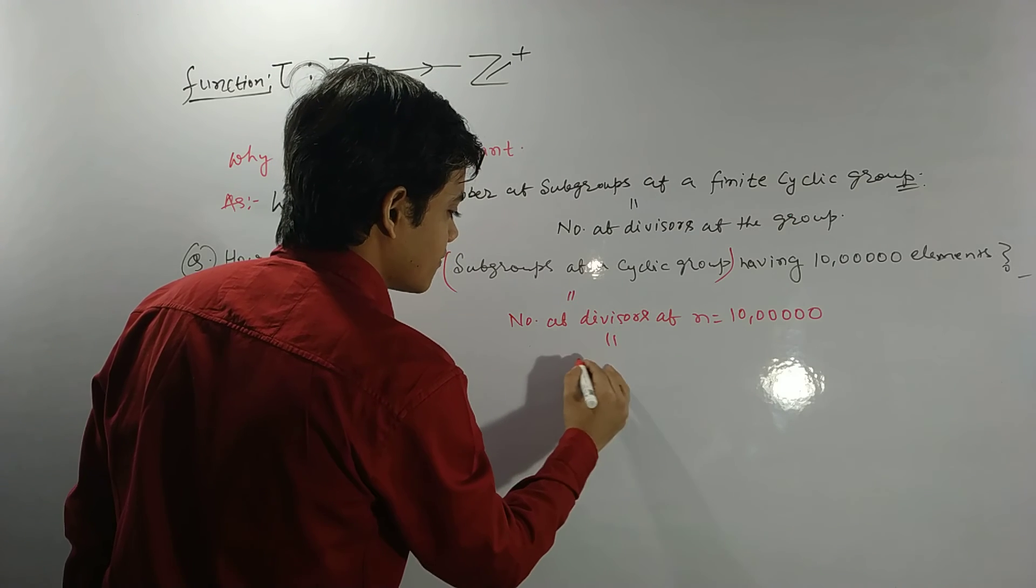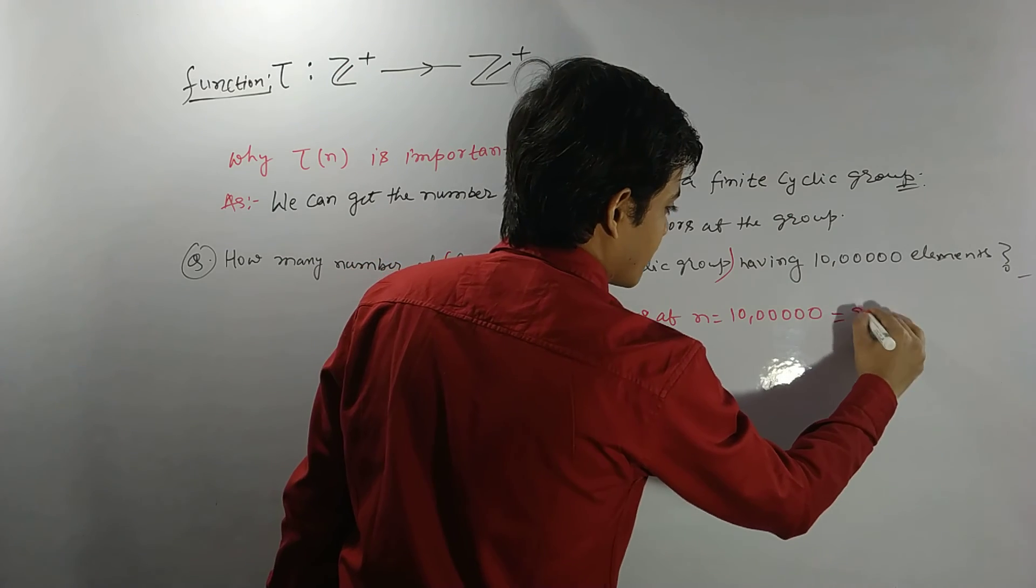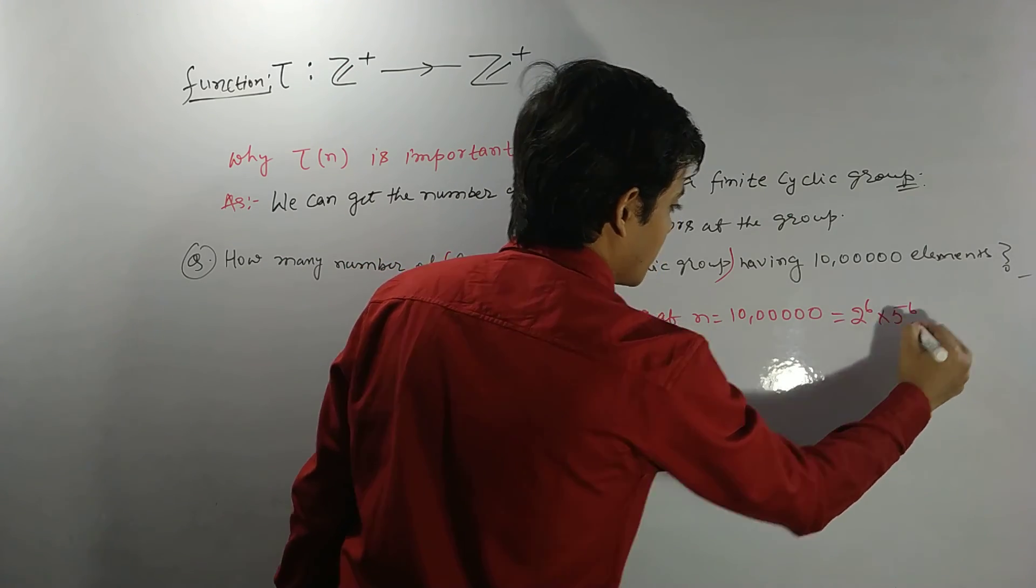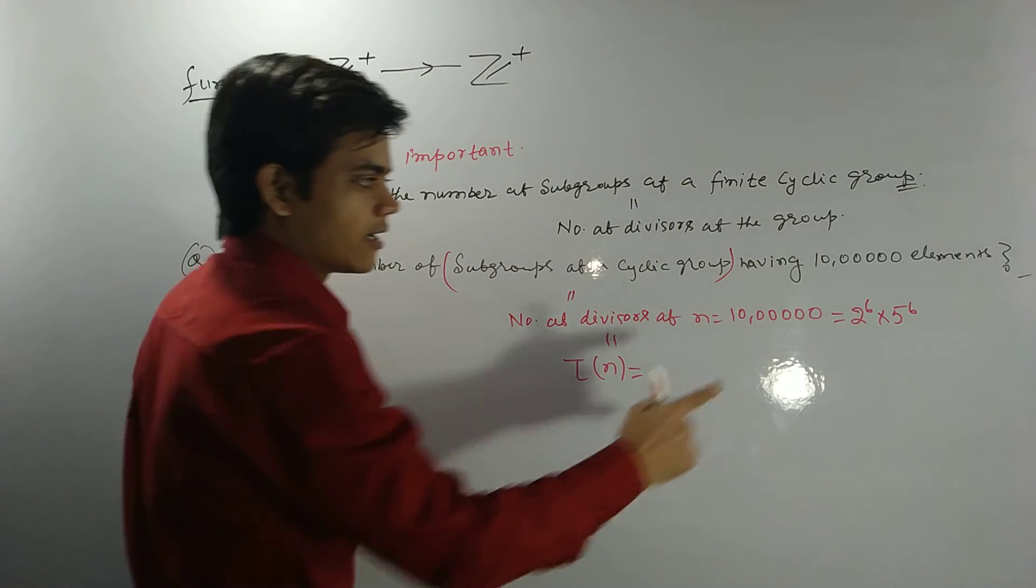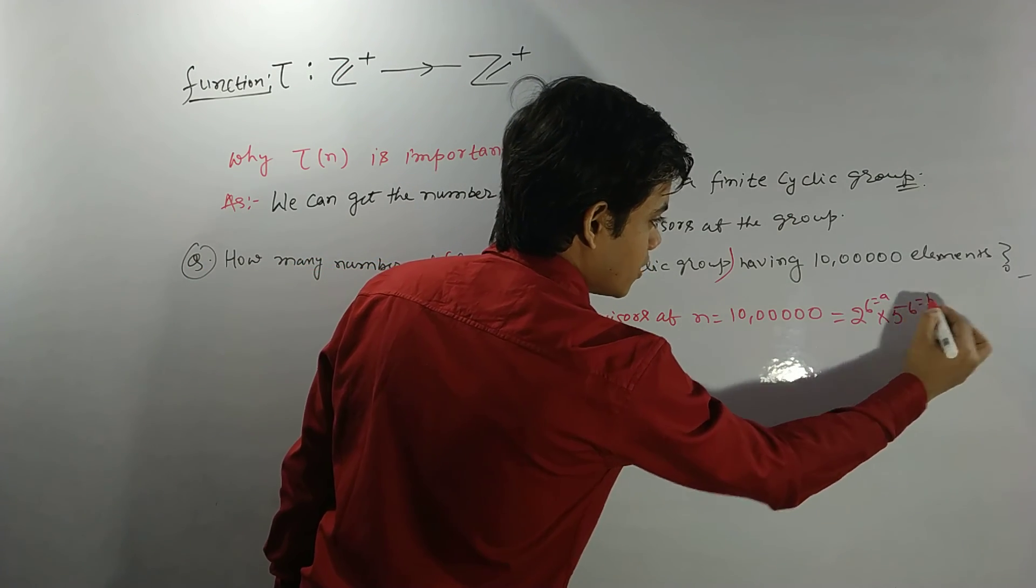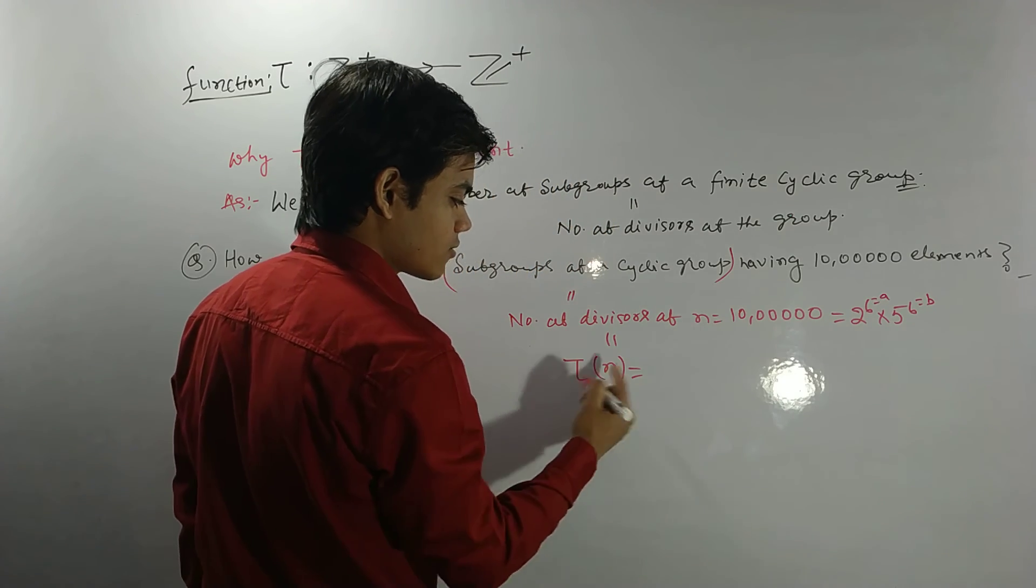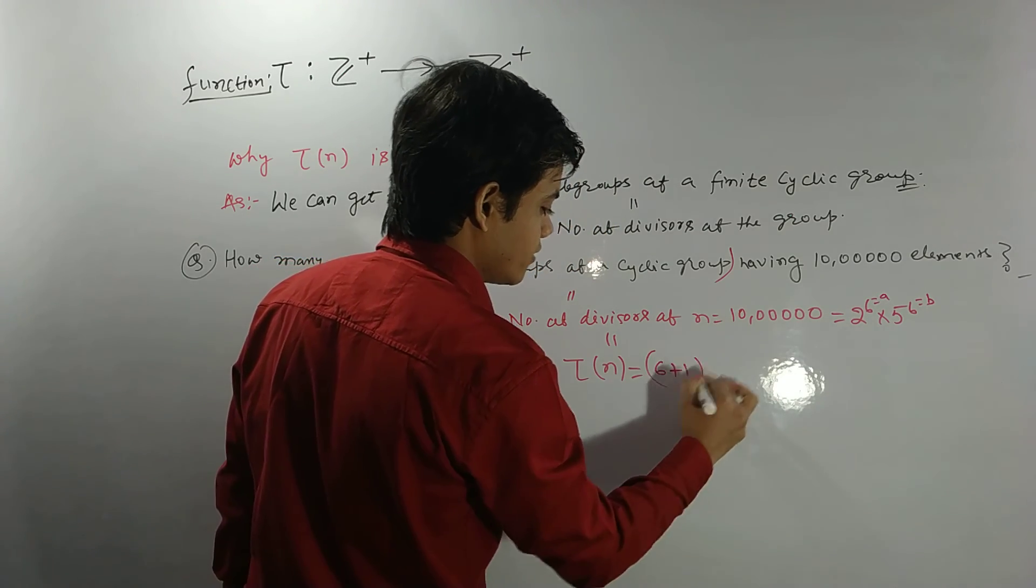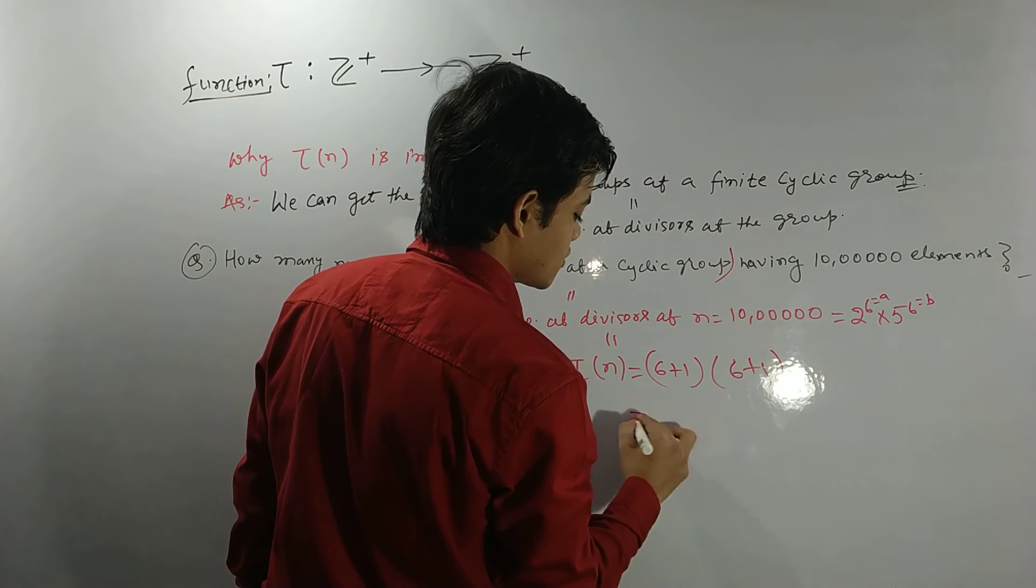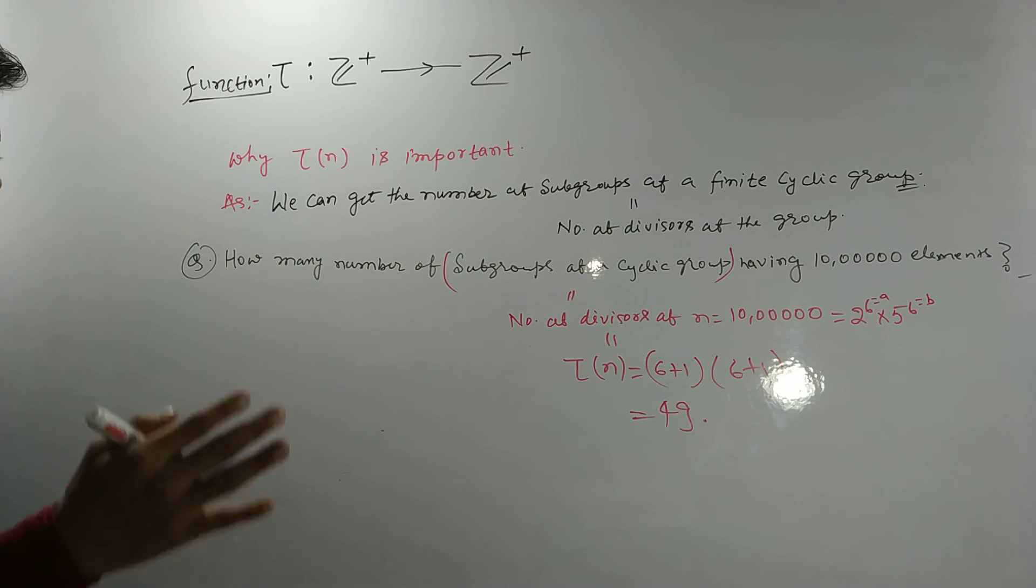So the number of subgroups of this cyclic group is what? Number of divisors of n equals this 10 lakh. And this is given by Tau(n). And 10 lakh can be written as 2 to the power 6 times 5 to the power 6. You can verify it. So here this is your a, this is your b. Means a equals 6 and b also equals 6. So Tau(n) is what? 6 plus 1 times 6 plus 1, which gives what? 49.